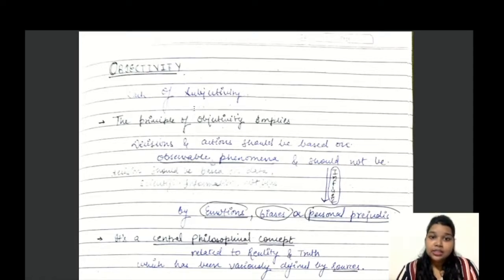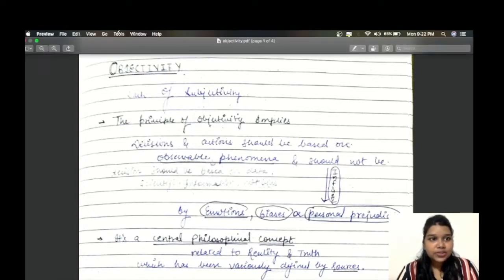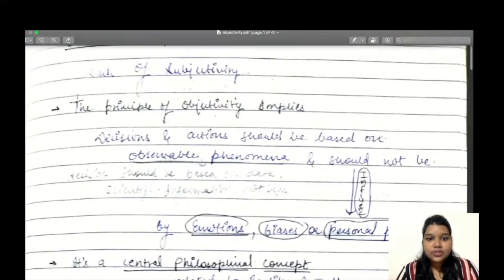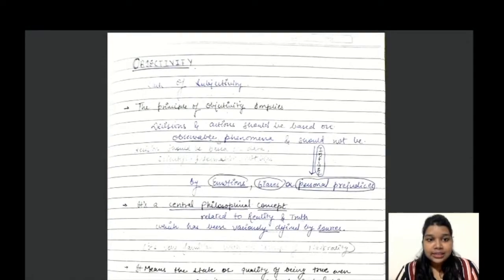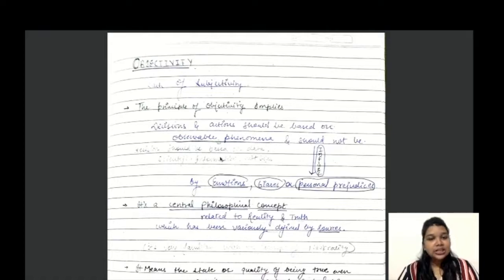The principle of objectivity implies that decisions and actions should be based on observable phenomena. The observable phenomena here means that decisions should be based on data, scientific information, facts, and research. They should not be influenced by emotions, biases, or personal prejudice.